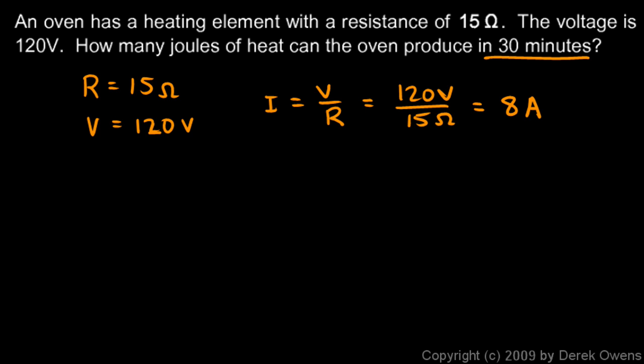So the current is 8 amps. Now, we're told to find how many joules of heat it can produce in 30 minutes, so the time is 30 minutes, which is 1,800 seconds using our standard unit of seconds. Then the heat produced, you could say Q for heat or H for heat, it's going to be I²Rt.